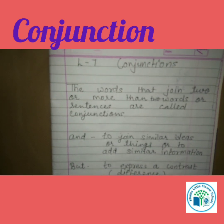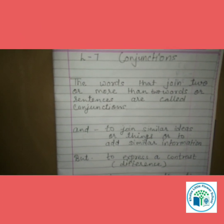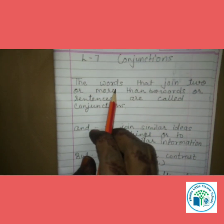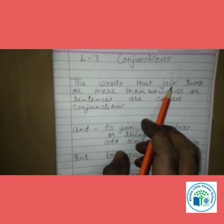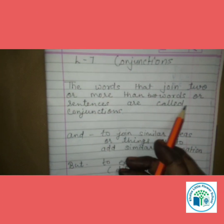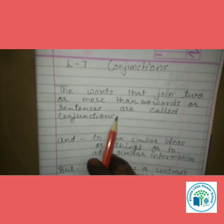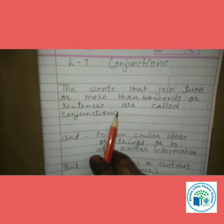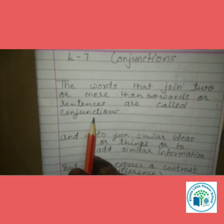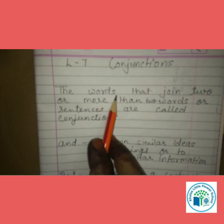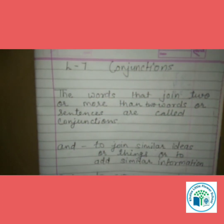We have studied Conjunctions in second standard as well. So what is a Conjunction? A Conjunction is a word that joins two or more than two words or sentences. Jo do words ko, do sentences ko, ya more than two words or sentences ko join karta hai — those words are called Conjunctions.